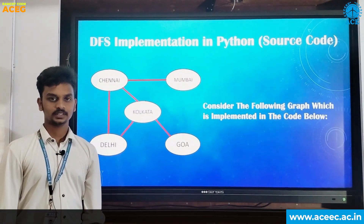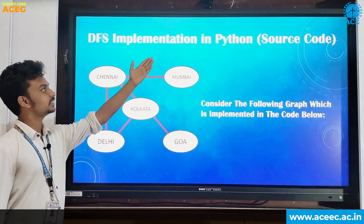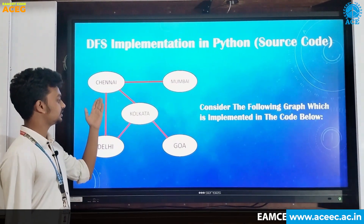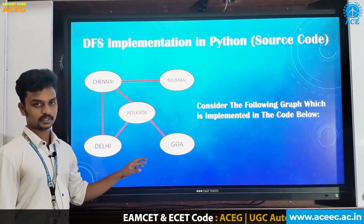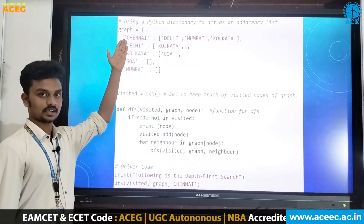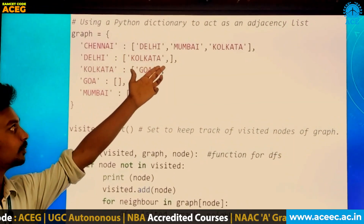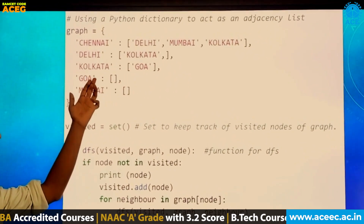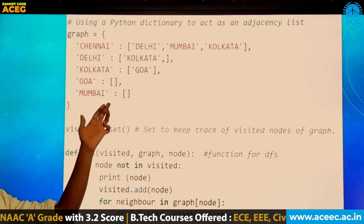Hello everyone, my name is Amit Shishanth. Let us see DFS implementation in Python. Here is a sample graph. Chennai is the initial node and Goa is the goal node. Let us see how the Python code implementation takes place. Chennai has adjacent nodes Delhi, Mumbai, Kolkata. Delhi has adjacent node Kolkata. Kolkata has adjacent node Goa. Goa and Mumbai have no adjacent nodes — they are empty.